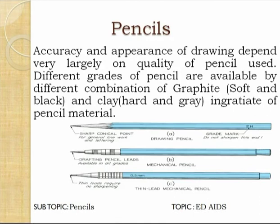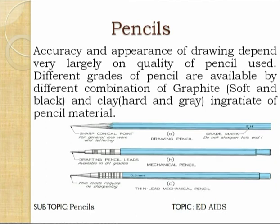The pencil is a very important material for engineering drawing because accuracy and transparency greatly depend upon the grade of the pencil. Different grades of pencils are available by different combinations of graphite and clay. Graphite is soft and black, while clay is hard and gray. By maintaining different proportions of graphite and clay, different grades of pencil can be produced for different types of drawing work.